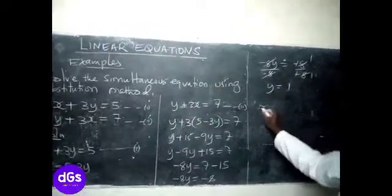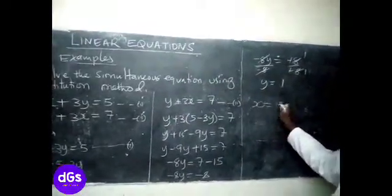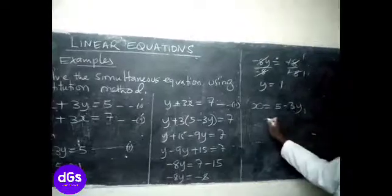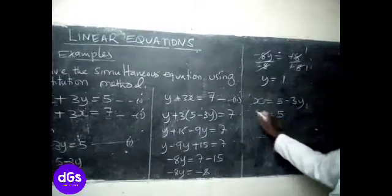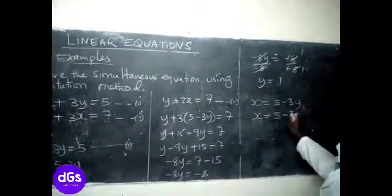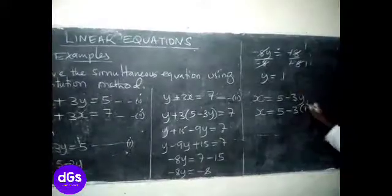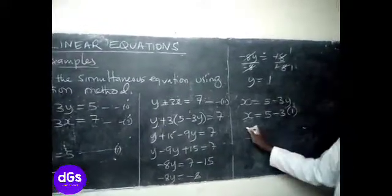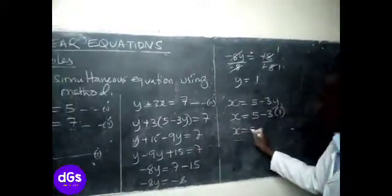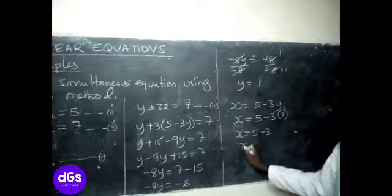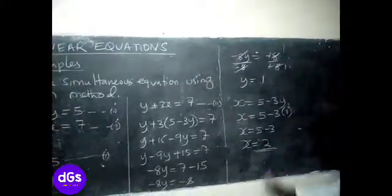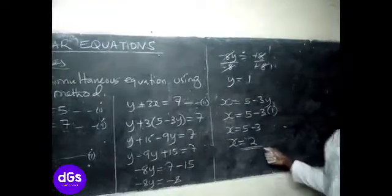So we have been given that x was 5 minus 3y. So we say this is 5. X will be 5 minus 3 into 1. So x becomes 5 minus 3, and for that case, x is 2.